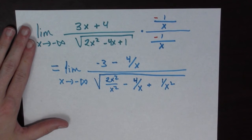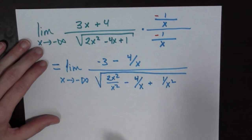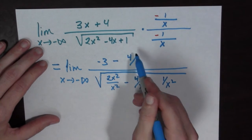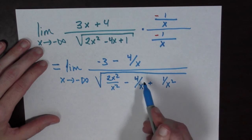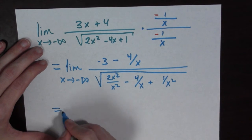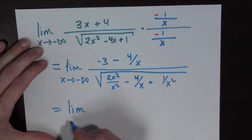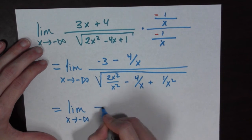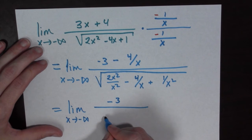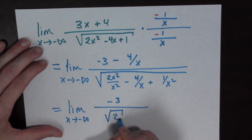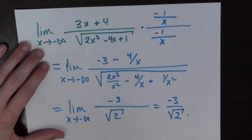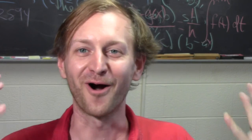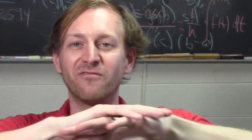Now we take the limit as x goes to negative infinity. This term goes to 0, this term goes to 2, this term goes to 0, this term goes to 0. So it's equal to minus 3 all over the square root of 2, which is just equal to minus 3 over the square root of 2. Done. We're all done with these four examples of limits at infinity. Let's go do some more math.